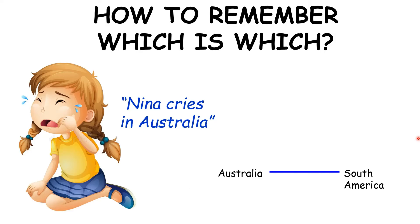If the exam asks what El Niño conditions are like, just remember the phrase 'Nina cries in Australia.' During La Niña there is rain in Australia, and El Niño is the opposite — so during El Niño there is rain in South America, so you would draw your clouds there. For there to be rain in South America there must be rising air, caused by a warm ocean, which has been blown and dragged across the Pacific Ocean in that direction. From this rhyme you can remember the rest of the El Niño or La Niña cycle.